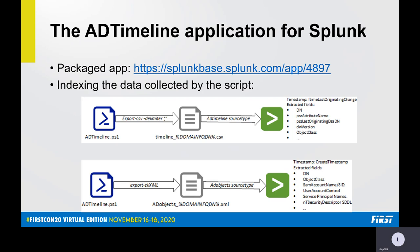Now we will see how we analyze the data collected by the AD Timeline collection. For this, we use a Splunk app available on Splunk Base. The AD Timeline collection script generates the AD timeline in a CSV file, so we apply the AD Timeline source type to index it in Splunk, with field extractions performed for fields such as distinguished name and object class. Regarding the Active Directory objects themselves, they are exported in an XML file, and we apply the AD object source type to it, with field extractions for attributes such as distinguished name, service principal name, and so on.